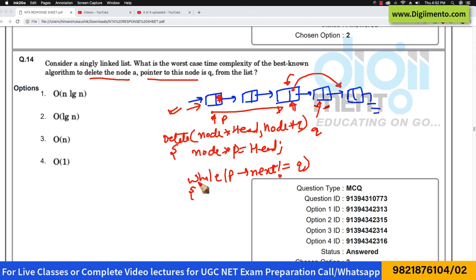So I am ignoring the termination condition, whether this node exists or not. I am just assuming that the linked list is having these nodes. So we have to go P is equal to P arrow next.